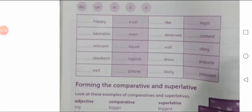I am going to read them and then tell you — you can also guess them. Happy / unhappy. Beatable / unbeatable. Relevant / irrelevant. Obedient / disobedient. Well / unwell. Trust / distrust. Even / uneven. Equal / unequal. Logical / illogical. Please / displease.